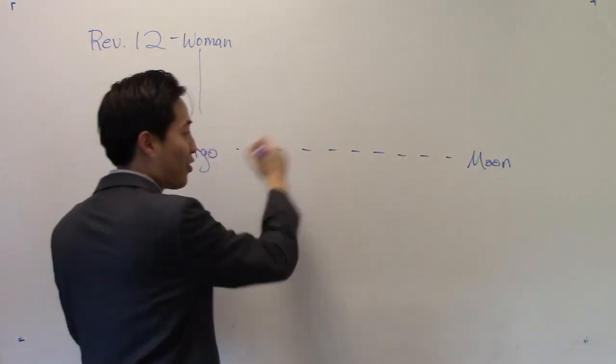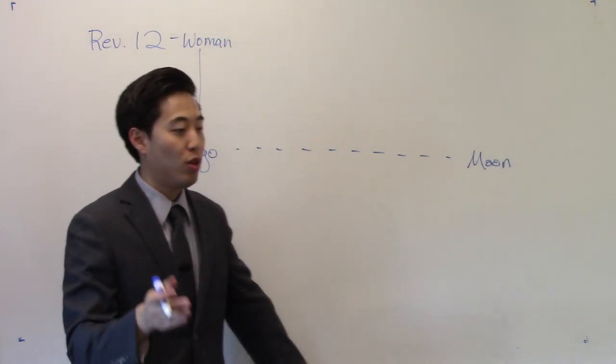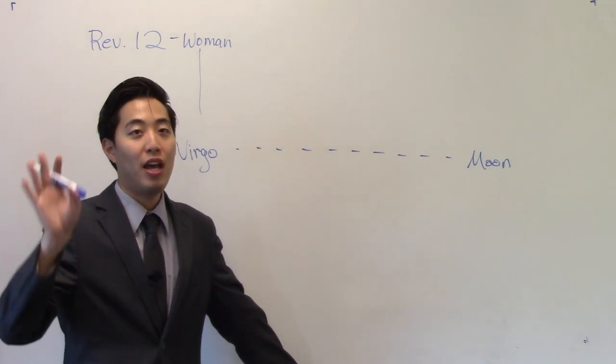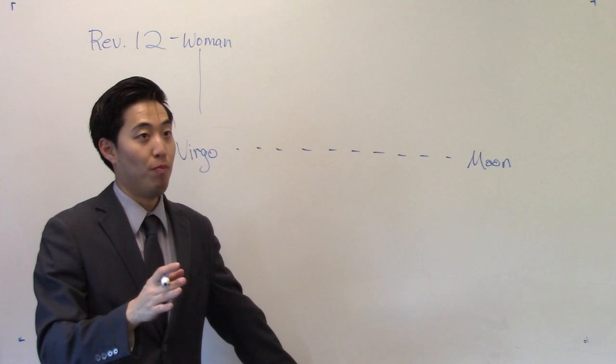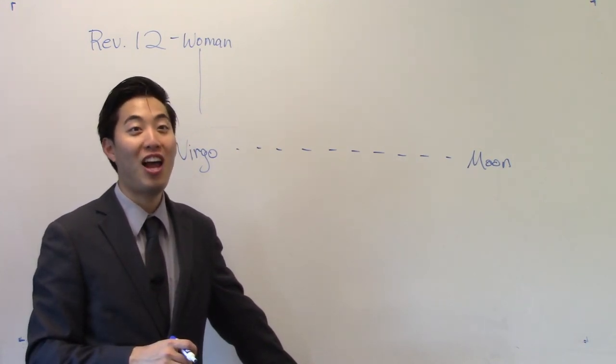But she gives birth, right? So she gives birth to the man-child. And then they assumed, as you remember the September one, they assumed that this is going to be Jupiter as the man-child. But now they're switching it. You know what they switch it now to? Leo the lion.